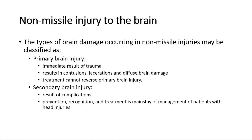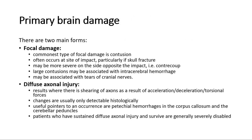Primary brain injury is the immediate result of trauma. It results in contusions, lacerations, and diffuse brain damage. Treatment cannot reverse primary brain injury. Secondary brain injury is a result of complications — prevention, recognition, and treatment is the mainstay of management of patients with head injuries. There are two main forms of primary brain damage: focal damage and diffuse axonal injury.